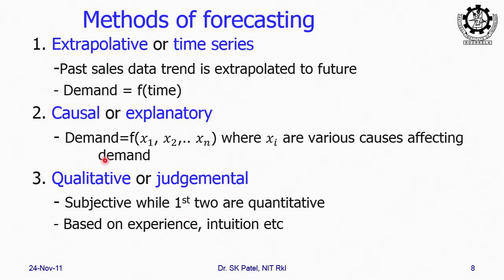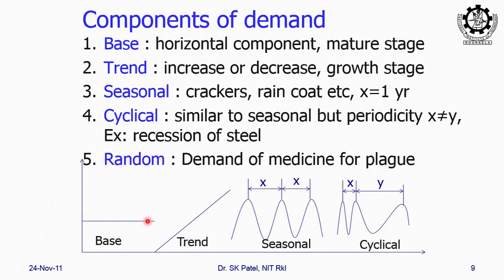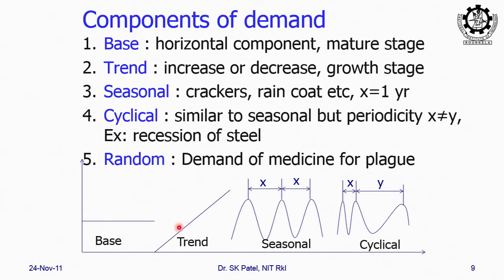We will be discussing the first two quantitative methods; the third is just for your information. Since we have to establish a pattern — demand versus time — you must know the various components of demand. There are five different components. The first is the base component: with time, if demand remains constant, it will be a horizontal graph. This is called the base. Every product has a product life cycle. Initially demand is less, then as it progresses demand slowly increases, reaches the maximum, and finally declines when better technology or lower-cost alternatives arrive.